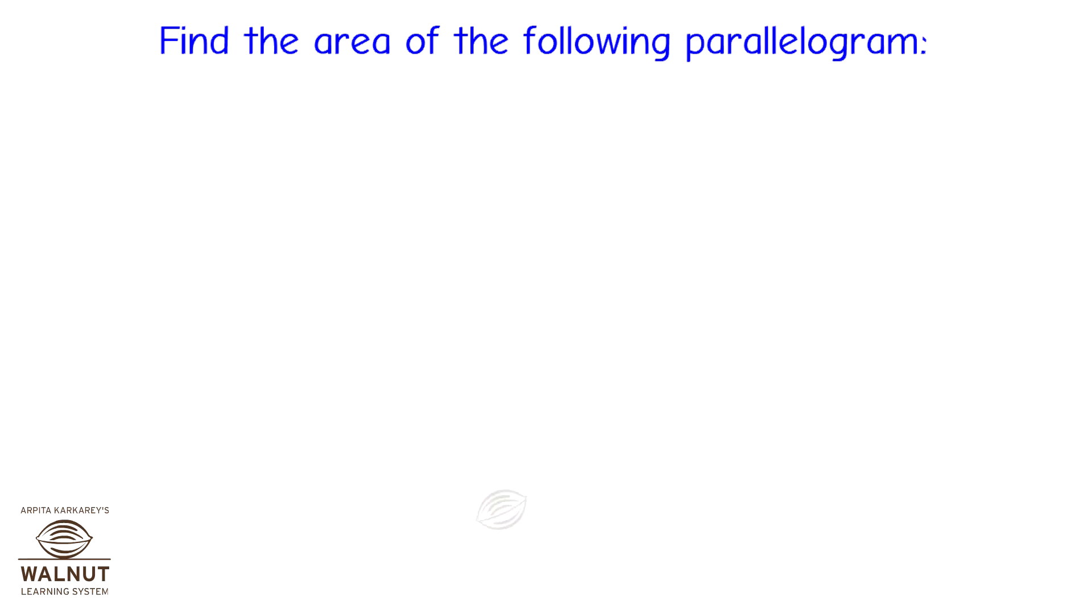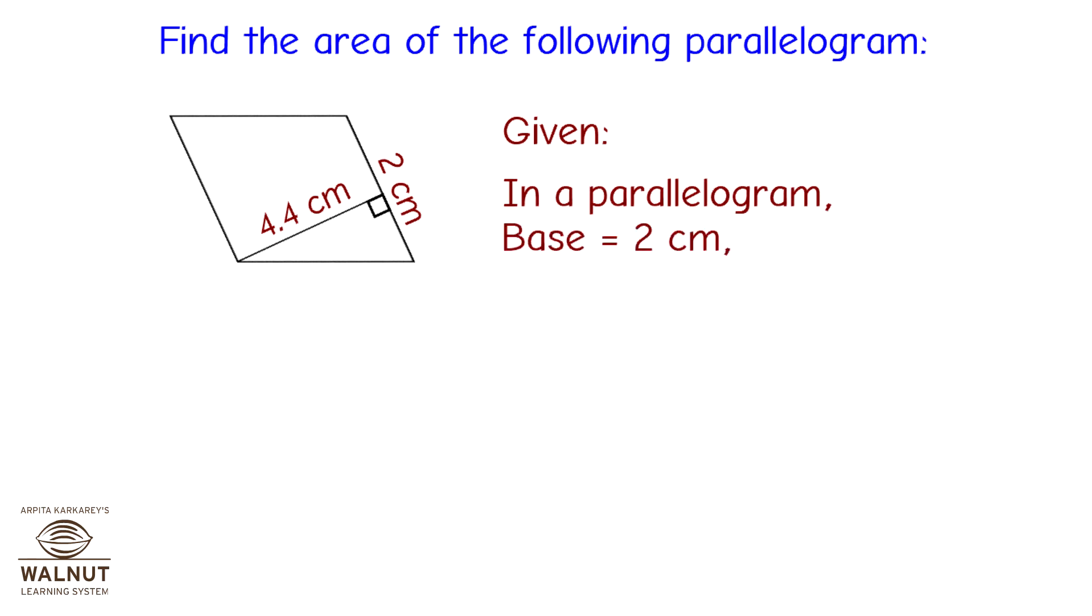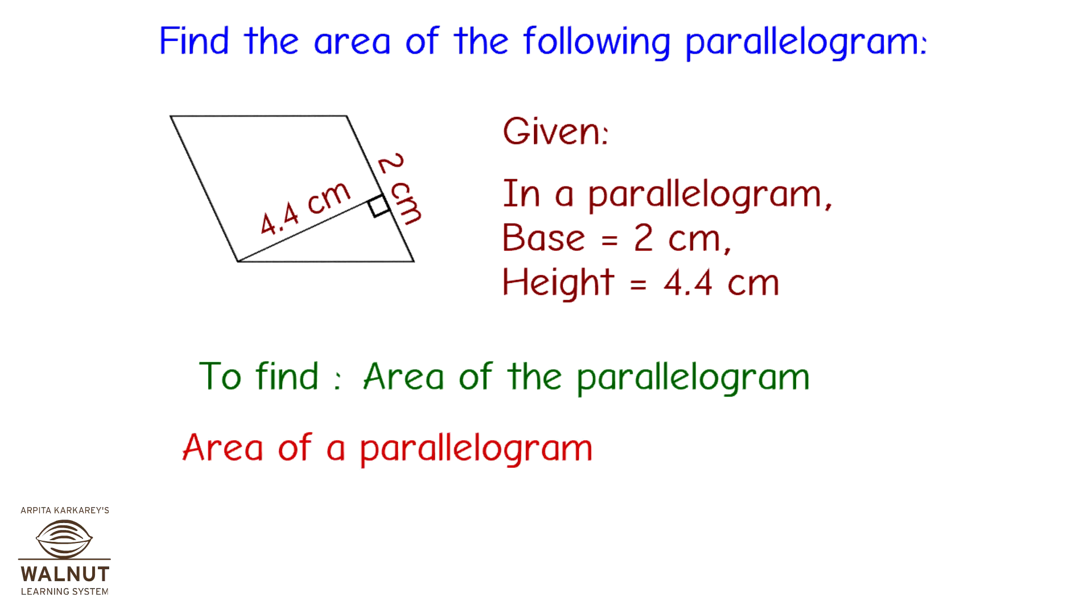Let's solve this. Find the area of the following parallelogram. Look at the figure first and write what information is given. In a parallelogram, base is equal to 2 cm, height is equal to 4.4 cm. Write what is to be found out. We have to find the area of the given parallelogram. Let us write the formula first. Area of a parallelogram is equal to base into height. Put in the values and solve. Base is 2 cm and height is 4.4 cm. That gives us the answer 8.8 cm².